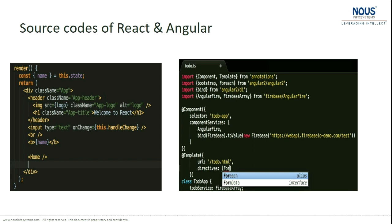This slide explains why we made that decision. On the left side is React code, on the right side is Angular code. In React, your HTML, CSS, and JavaScript are tightly coupled — this is called JSX. On the right you see Angular. There is absolutely no relationship between React and Angular.